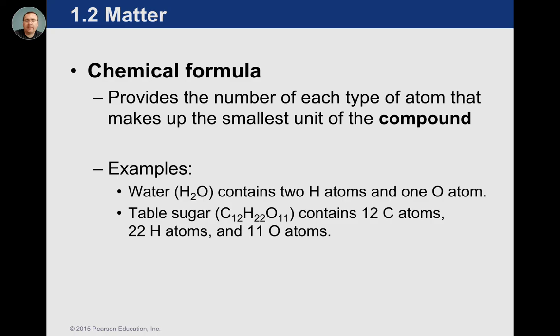Chemical formulas have subscripts that tell you how many of each atom — nothing too difficult there. Water has two hydrogens and one oxygen. Whereas sugar, a complex disaccharide from a later chapter, is going to have 12 carbon atoms, 22 hydrogen atoms, and 11 oxygen atoms. The subscripts tell you specifically — the capital letter, the lowercase letter after it, and how many are attached to that specific compound or molecule.